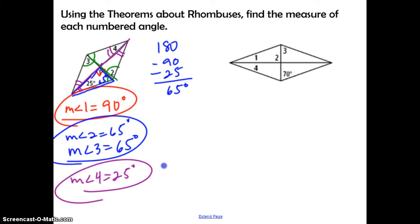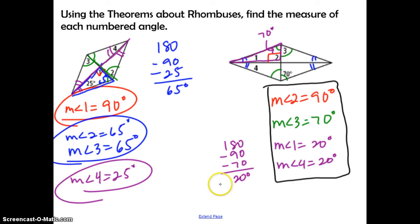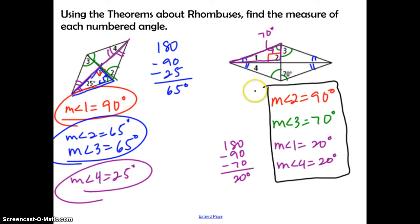Now use the same theorems and properties to find the measures of the numbered angles in the next figure. The measure of angle 2 is 90 degrees, angle 3 is 70 degrees, and angles 1 and 4 are both 20 degrees.